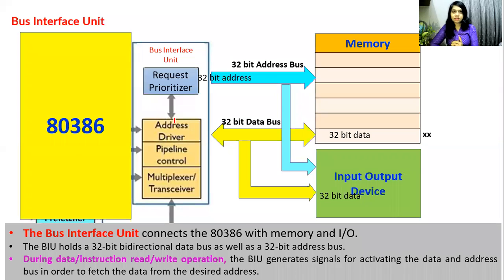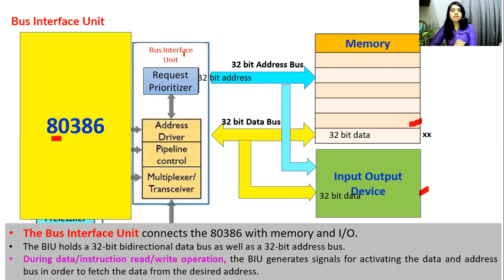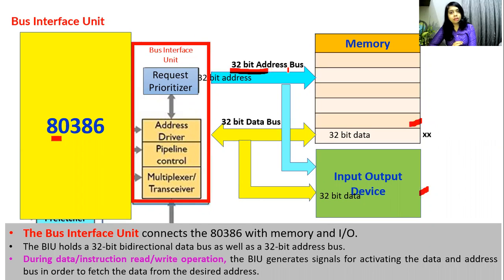Let's start with the bus interface unit. The bus interface unit, also available in the 8086, connects the 80386 with memory and input-output devices. It holds a 32-bit unidirectional address bus as well as a 32-bit bidirectional data bus.